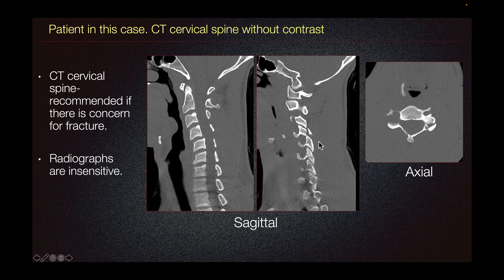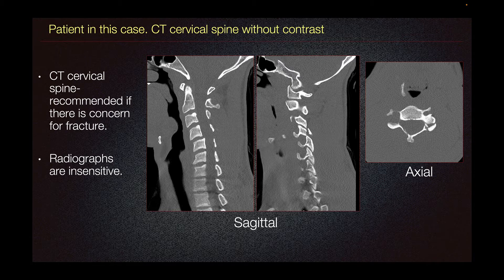This is the patient in this case, who underwent CT cervical spine without contrast. In the setting of trauma with concern for cervical spine fracture, CT cervical spine is recommended. Radiographs are not routinely done as they are insensitive, with only 47% sensitivity in detecting cervical spine fracture.